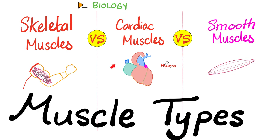In the last video, we had an introduction about the muscles and we focused on the skeletal muscles. We talked about the muscle, the muscle fascicles, the muscle fibers or myofibers, the muscle fibrils, and the myofilaments, which include thin filaments known as actin, thick filaments known as myosin, and intermediate filaments known as desmin.